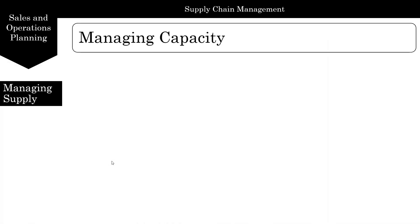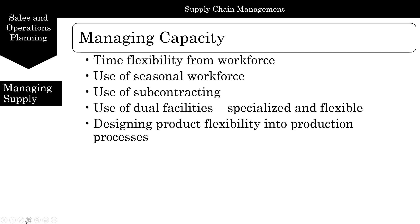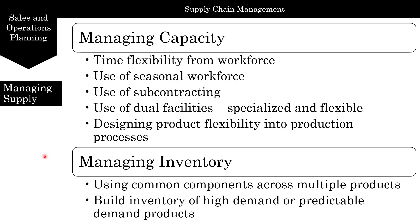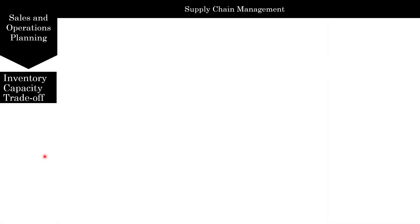We manage capacity using time flexibility from the workforce — overtime and underutilizing the workforce. You can use a seasonal workforce, subcontracting, and dual facilities. You could have specialized facilities which make only one type of product for normal demand, and flexible facilities for surge peak demand, which can change what they do. You can also incorporate product flexibility into the production process, and manage supply by using common components across multiple products.